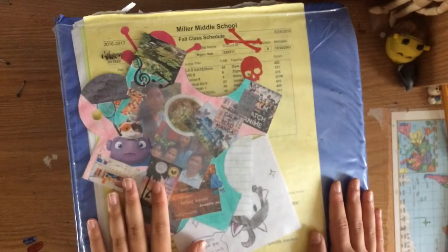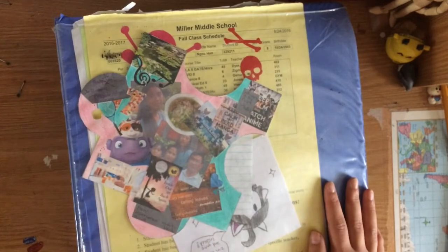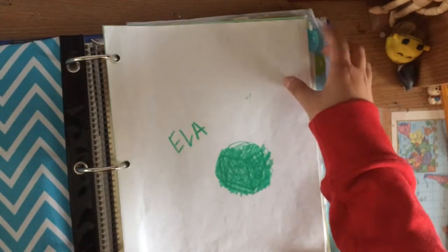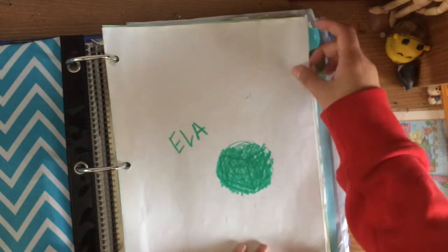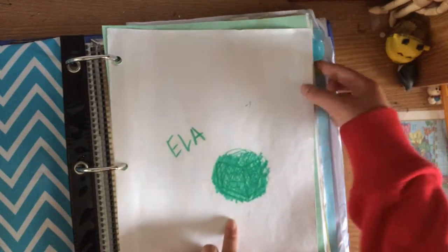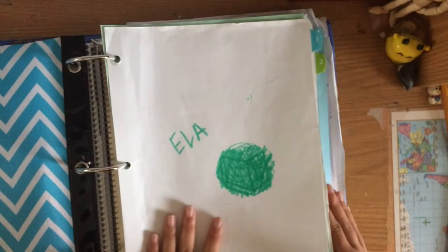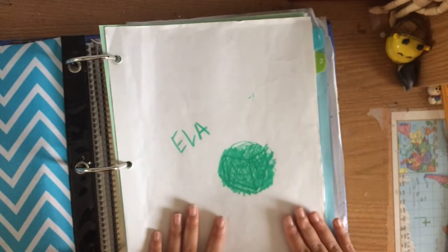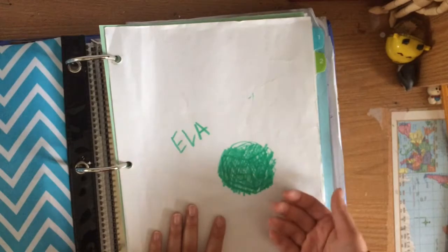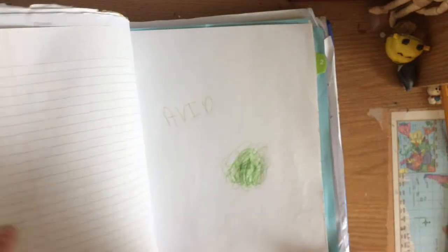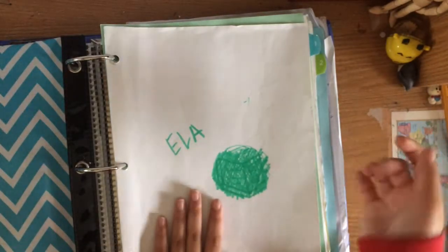An important part of binder organization is knowing that you have dividers. These are dividers. Dividers must always be labeled. They must also be placed in chronological order by your period. So if your first period is ELA, it must go in the front. If your second period is AVID, it would go behind ELA, etc.